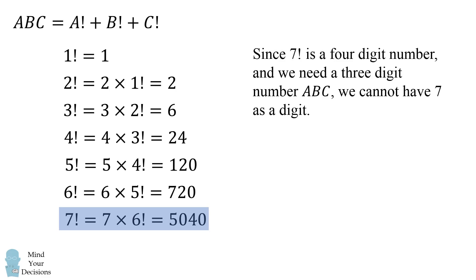Since seven factorial is a four digit number, 5040, and we need a three digit number ABC, that means we cannot have seven as a digit. It's too large.